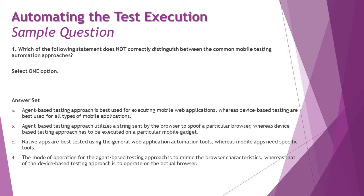Option B: agent-based testing approach utilizes a string sent by the browser to spoof a particular browser, whereas device-based testing approach has to be executed on a particular mobile gadget. That is appropriately correct, because web browser interaction spoofing using the user agent string is related to agent-based testing, whereas device-based testing requires real-time devices. If you just remember that agent-based testing is about browsers and device-based testing is about gadgets, that's sufficient.